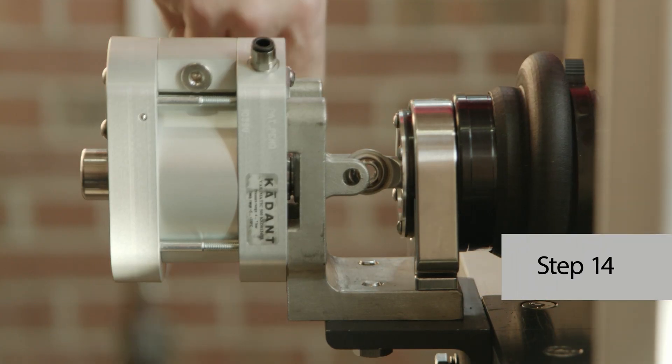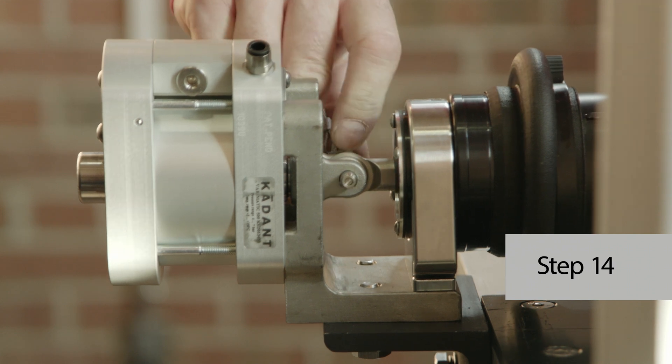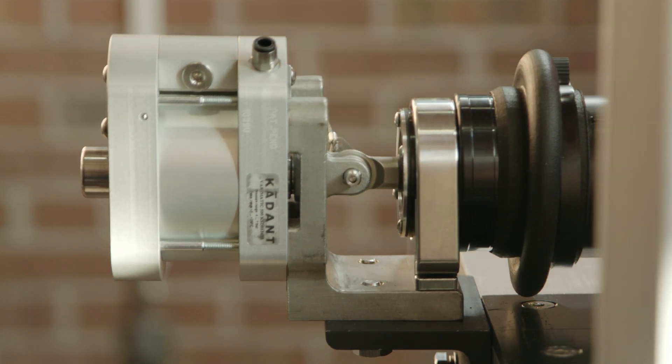Step 14, push or pull the structural tube as required to align the pull pin holes between the clevis and rod eye. Install the pull pin.